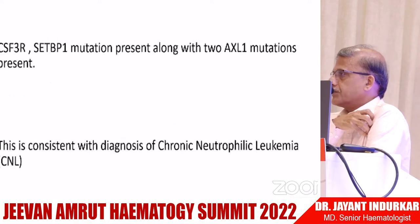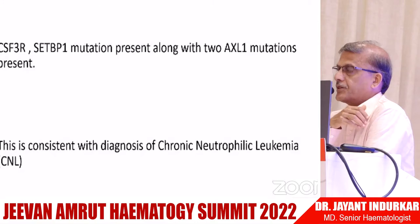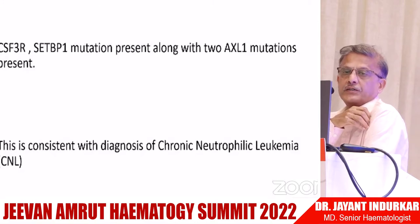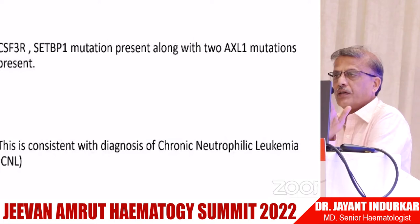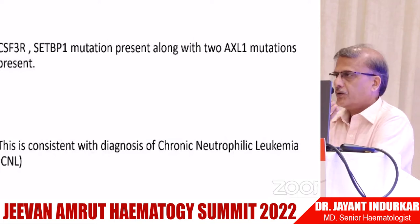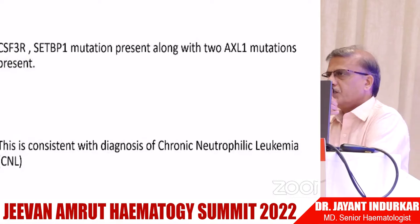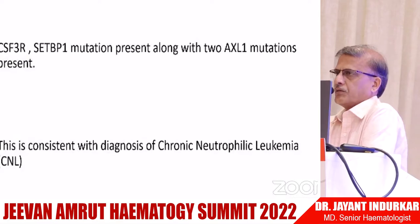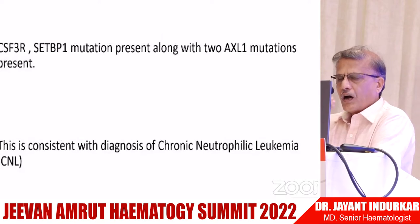The MPN panel: all five parameters were negative. Karyotype: 46XY. NGS was requested. Meanwhile, transfusions, hydroxyurea, and erythropoietin were given. NGS showed CSF3R and SETBP1 mutations along with two ASXL1 mutations. This is consistent with a diagnosis of chronic neutrophilic leukemia — a genuinely uncommon disorder.